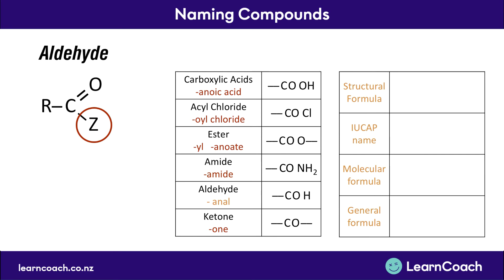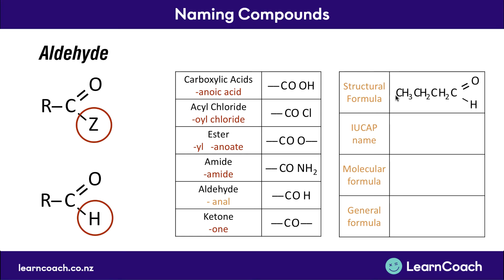Next is an aldehyde. An aldehyde is a little different in that up until now we've had atoms that aren't just carbons and hydrogens — a hydroxyl group, chlorine, oxygen, an amide group. Now we've just got an extra hydrogen attached onto the end as the Z group. A structural formula could look like this: a chain of four carbons, your double bonded oxygen, and a simple hydrogen added on the end. This gets the suffix AL at the end, despite the misleading spelling. So the prefix for four carbons is but, adding AL makes butanal. The molecular formula has three carbons and seven hydrogens, plus our COH at the end. The general formula replaces those carbons and hydrogens with R.